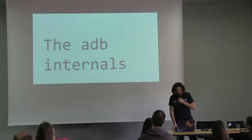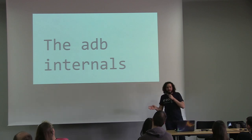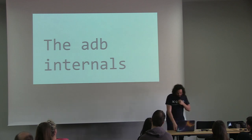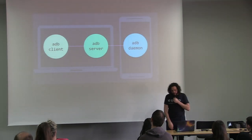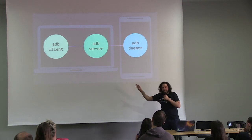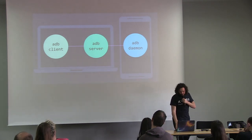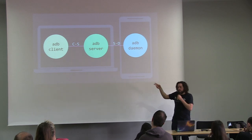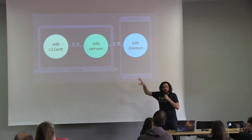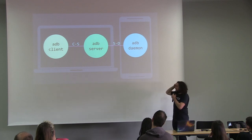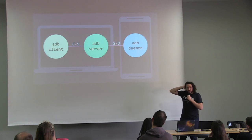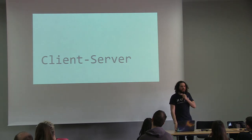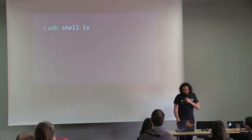Let's go back to ADB internals. It will be boring, but it will end up with a funny thing — that's the only reason I show you boring things. You know we have the ADB client, ADB server, and ADB daemon. All these elements communicate between each other, and each link has its own protocol. Let's see what these protocols are, very quickly. If you type `adb shell ls`, what happens between the client and the server?